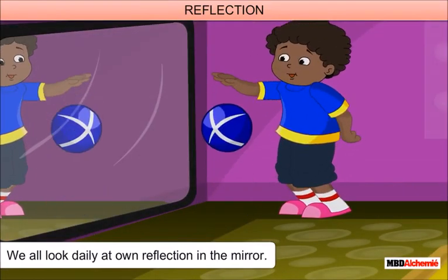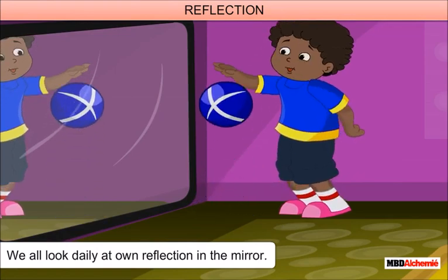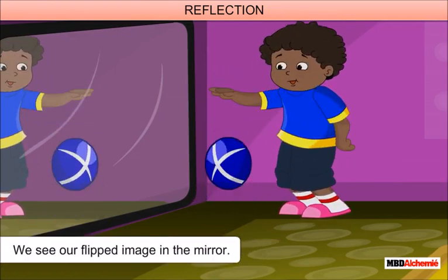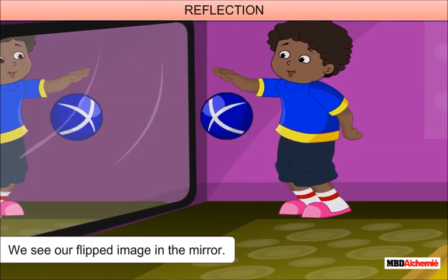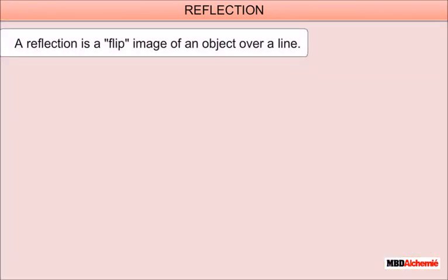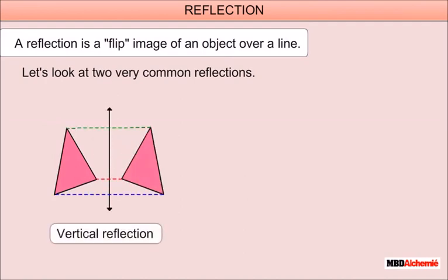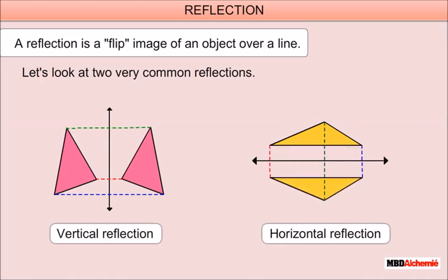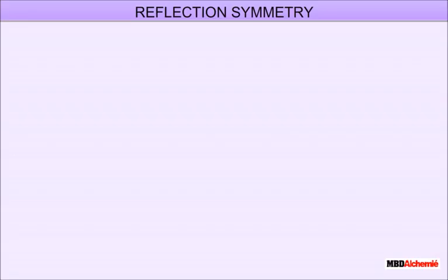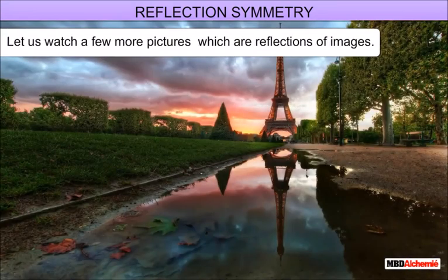Reflection: We all look daily at our own reflection in the mirror. We see a flipped image in the mirror. A reflection is a flip image of an object over a line. Let's look at two very common reflections: a vertical reflection and a horizontal reflection.